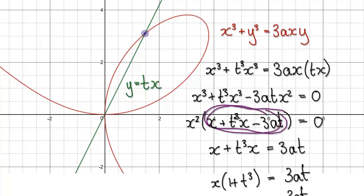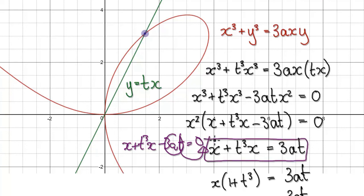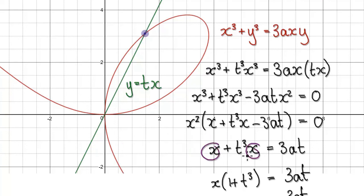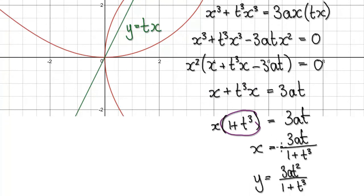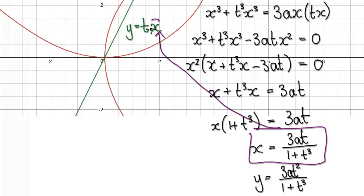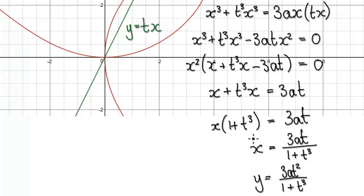So set this factor to be 0: X plus T cubed times X minus 3AT equals 0. Add this to both sides — that gives us this. Now you've got X here and X here, so factor out the X, giving us this. Divide both sides by the remaining factor, and X is given by this. Once you know X, put it back in; Y equals TX, so it's just times by T, giving T squared. So these are our parametric equations.